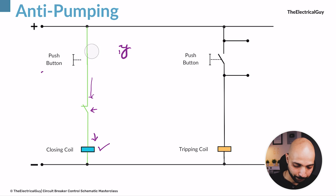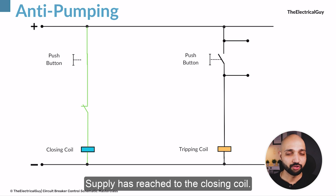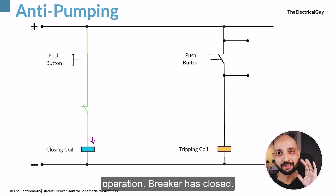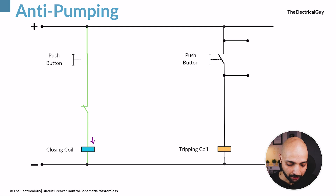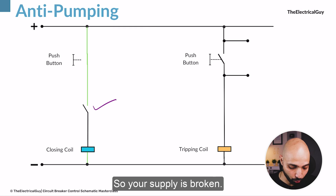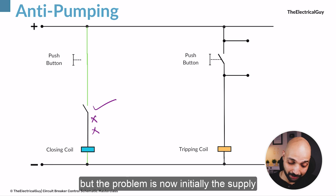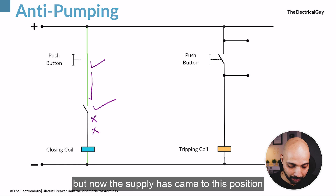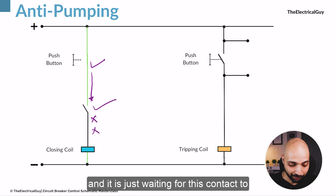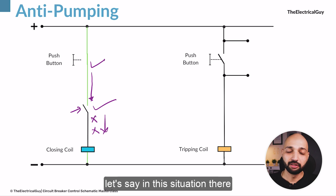So let me explain: you pressed the push button, supply reached the closing coil, the closing coil initiated the closing operation, the breaker closed. The moment the breaker closes, the NC contact opens — so the supply is broken and the closing coil is no longer getting supply. But the problem is the supply was held at the faulty push button and is now sitting just before this NC contact, waiting for it to close again. The moment this NC contact closes again, supply will reach the closing coil.